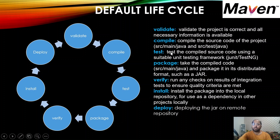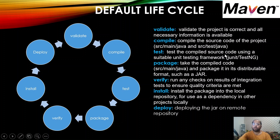Then we have the test phase, which is very important from a test automation point of view. This phase is used to trigger the unit test cases against the source code written in SRC main Java. We can write unit test cases using any unit testing framework such as JUnit or TestNG. From a test automation point of view, this phase will be used to trigger the test steps against a web application or mobile application.